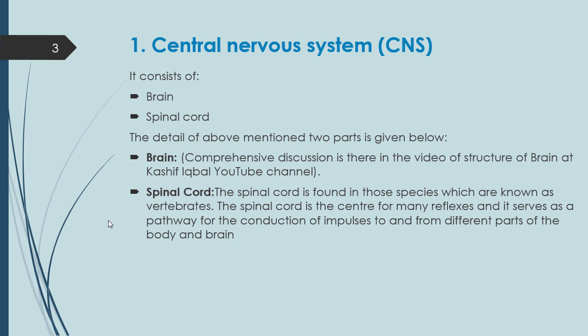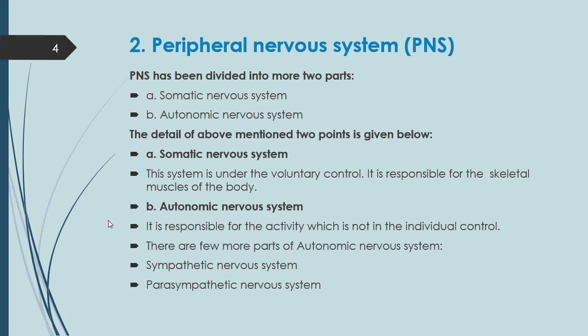Now the main part: we are talking about the Peripheral Nervous System, short form PNS. The PNS has been divided into two further parts: number one, the Somatic Nervous System, and number two, the Autonomic Nervous System.